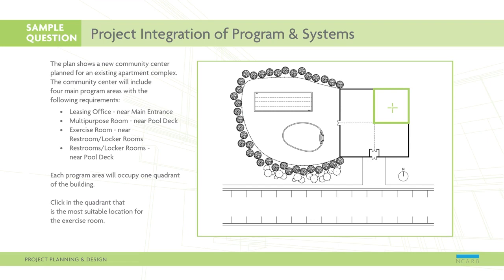The correct response is the northeast quadrant of the building. By reviewing the site plan, you can see the locations of the main entrance and the pool deck. The multi-purpose room and the restrooms/locker rooms must both be on the west side of the building. The leasing office goes in the southeast corner to be near the main entrance. This leaves the northeast quadrant for the exercise room. This AE-level item requires you to evaluate multiple pieces of plan and program information to provide an acceptable solution.